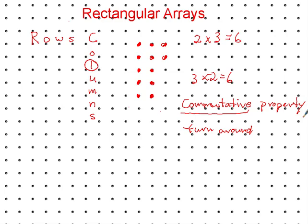When you're looking for rectangular arrays, we will also be finding all the different arrays for a certain number, all the factors of a certain number. So this problem here is six rows times one column equals six.